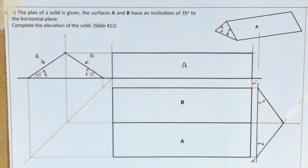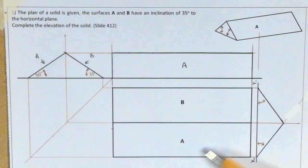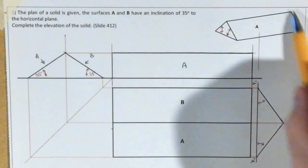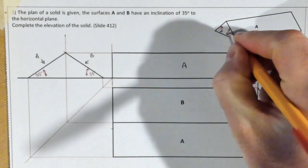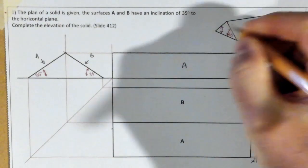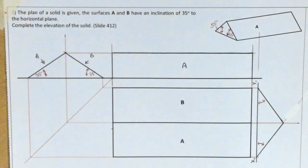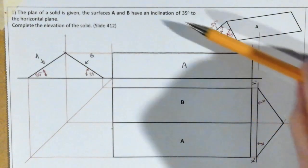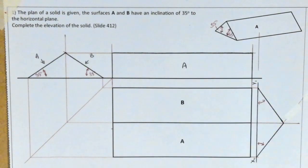Surfaces A and B have an inclination of 35 degrees to the horizontal plane. We were given the plan view with surfaces A and B, and we were told the pitch of the roof — as seen in the pictorial view — has an angle of 35 degrees to the horizontal plane. So the pitch going up in this direction is at 35 degrees when sitting flat on the ground.